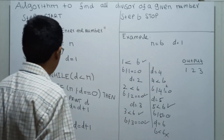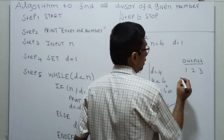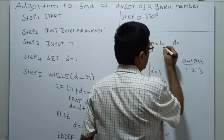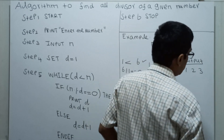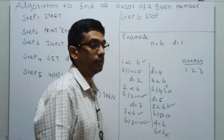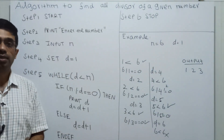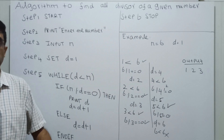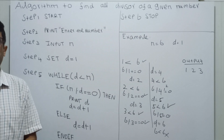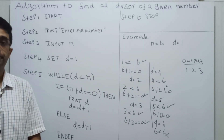So it will come out of the while loop and the algorithm will stop. The divisors of 6 are 1, 2, and 3. In this way the algorithm works. That's it. Thanks for watching this video lecture. Kindly subscribe to my channel and press the bell button. Thank you.